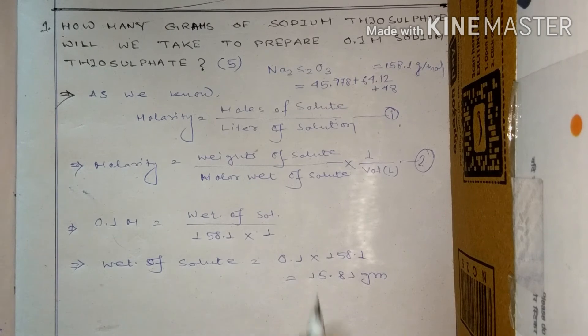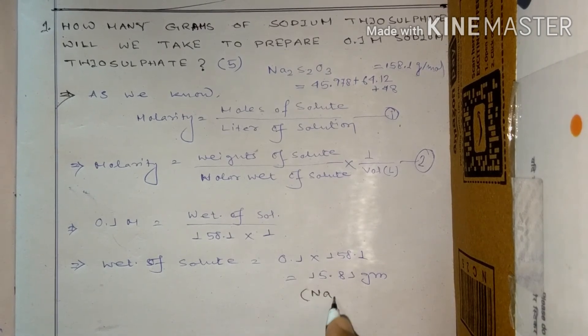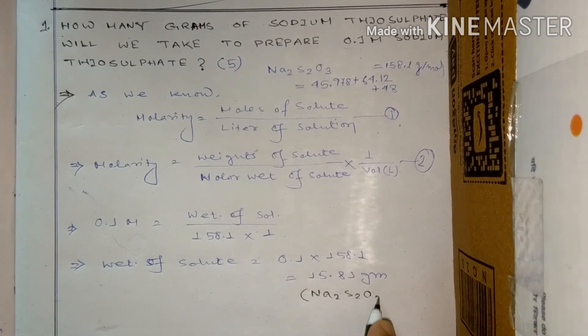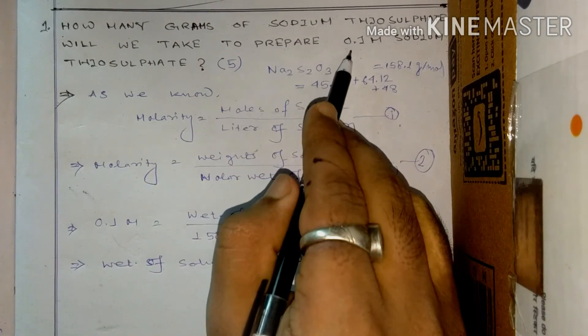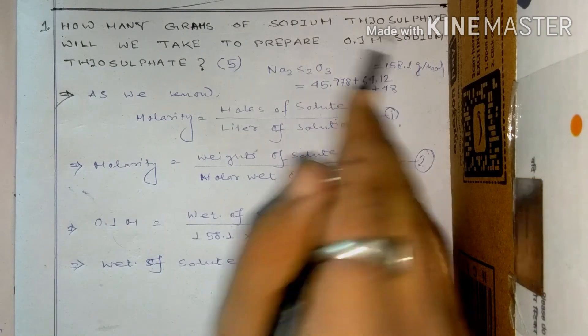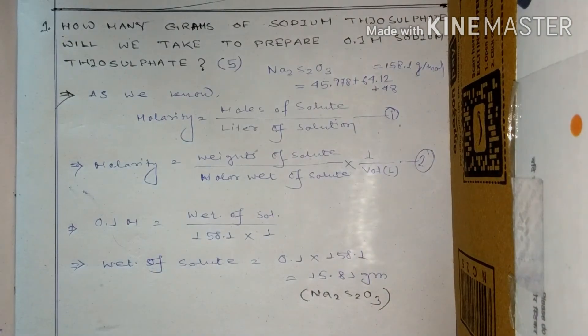So this is the weight of sodium thiosulfate Na2S2O3 that we have to dissolve in 1000 ml distilled water. Then it will prepare 0.1 molar sodium thiosulfate. Thank you, thanks for watching.